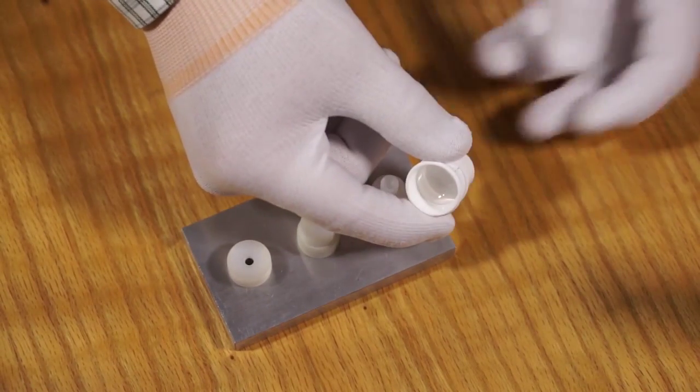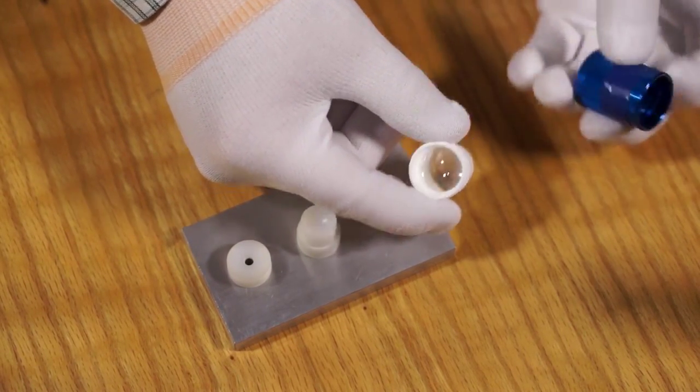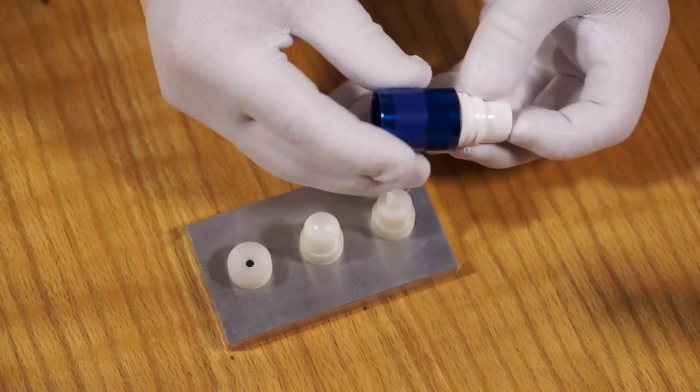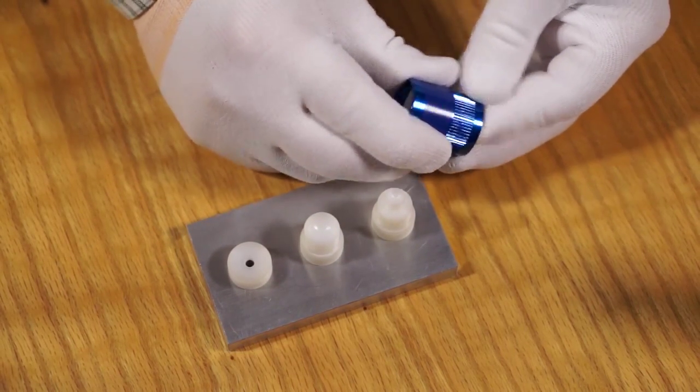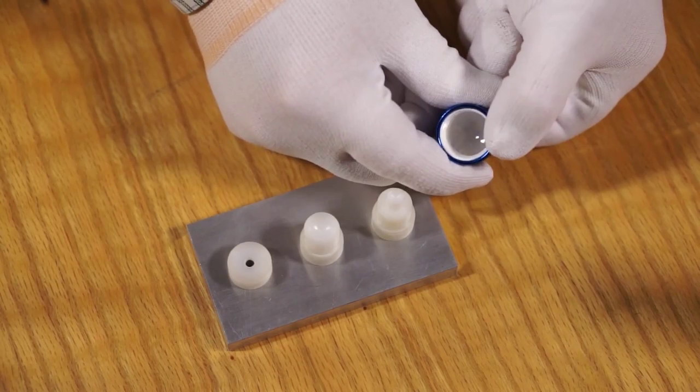These snap into the flexible white housing, or reflector, which is made from Dow Corning MS-2002 moldable silicone. Then this assembly snaps into the flashlight's retaining cap.